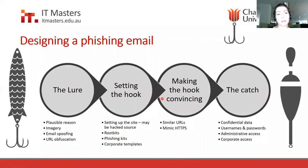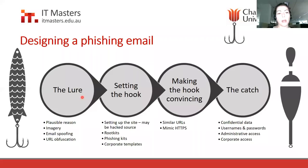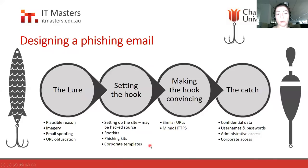From a phishing email design perspective, there are four main steps. First is the lure — your plausible reason — with imagery supporting it, such as a company logo like PayPal's for an invoice. You may spoof the email address, which we learned about last week, and you may obfuscate the URL — for example, using URL shorteners to hide the true destination. A tool on the phishingcountermeasures.com site can expand shortened URLs so you can see the true destination.